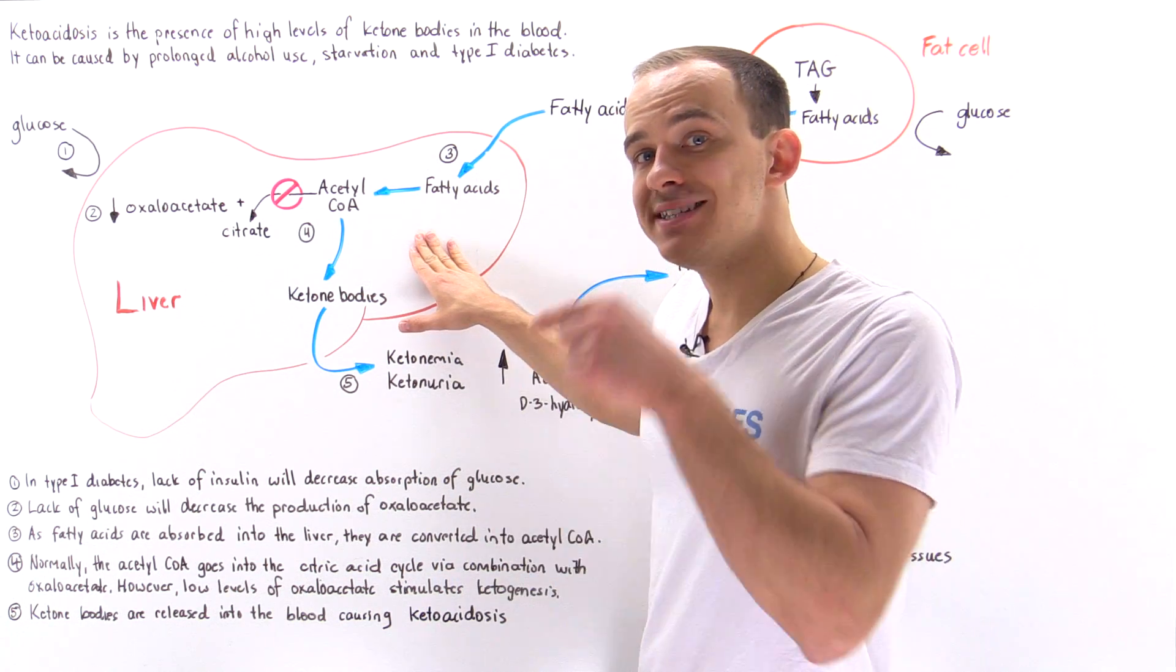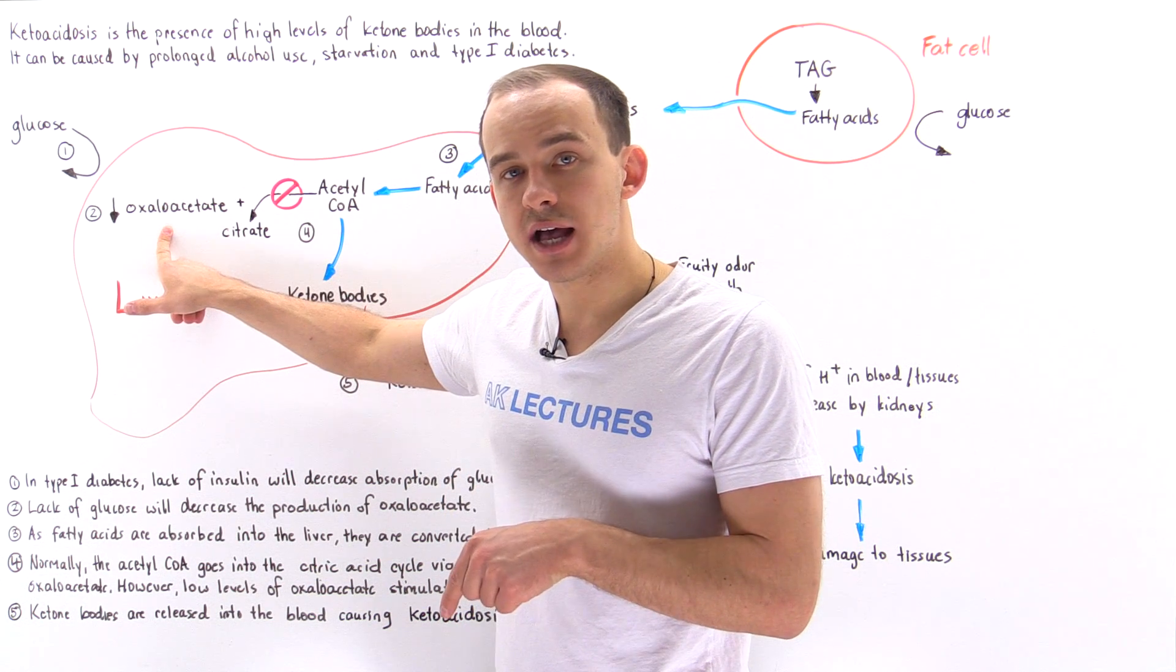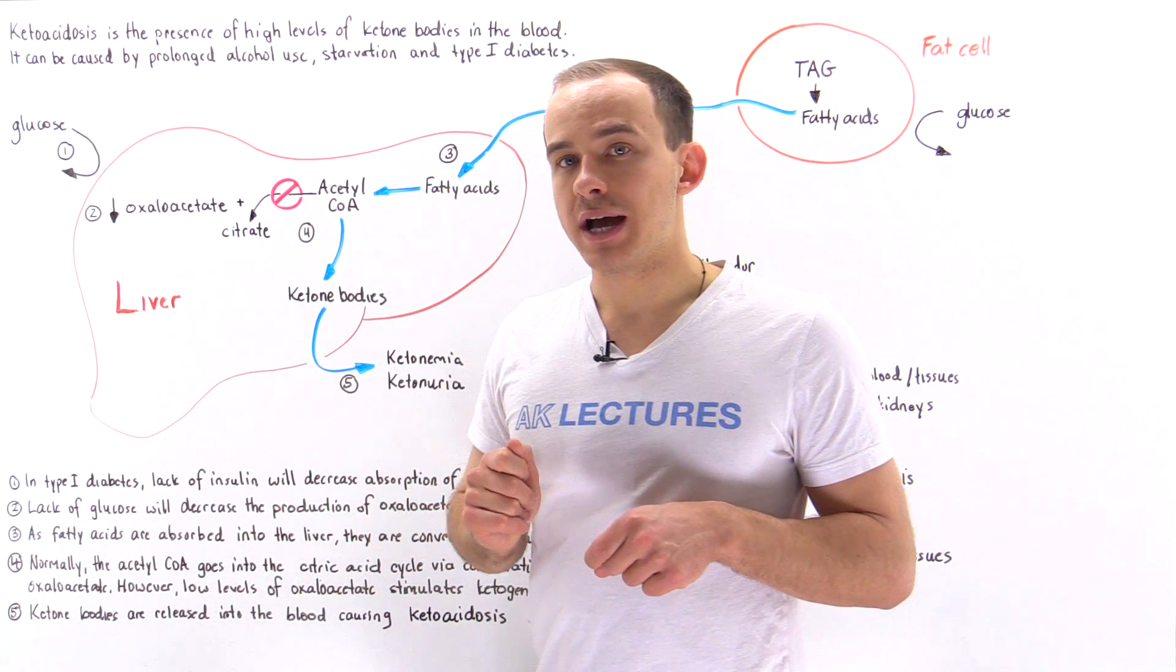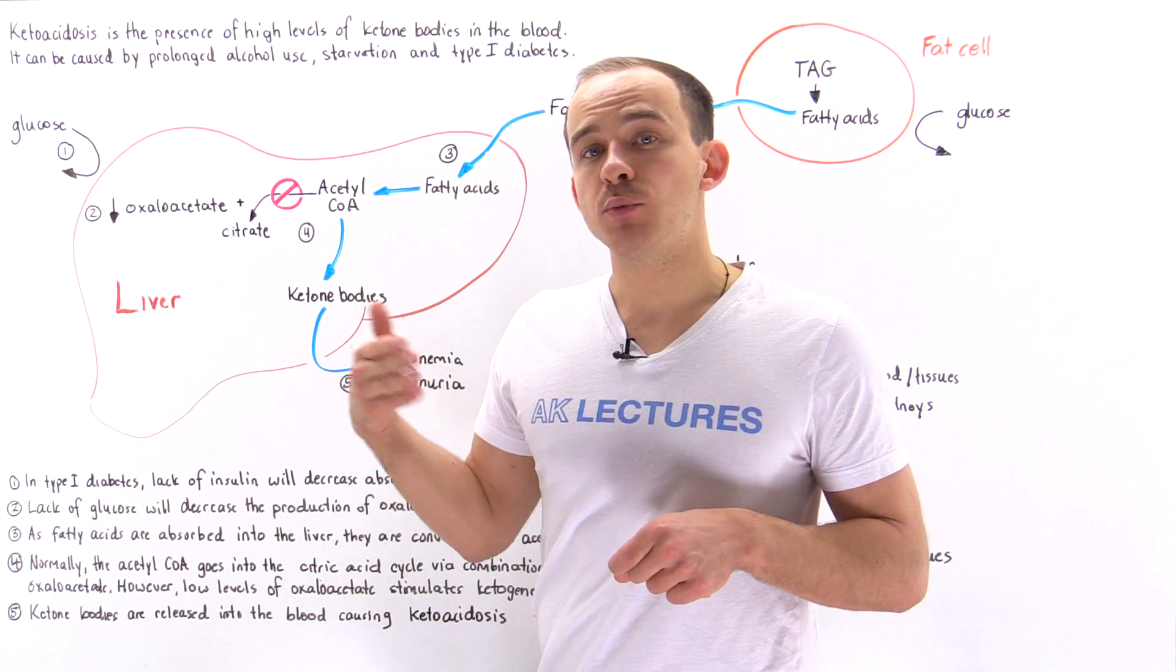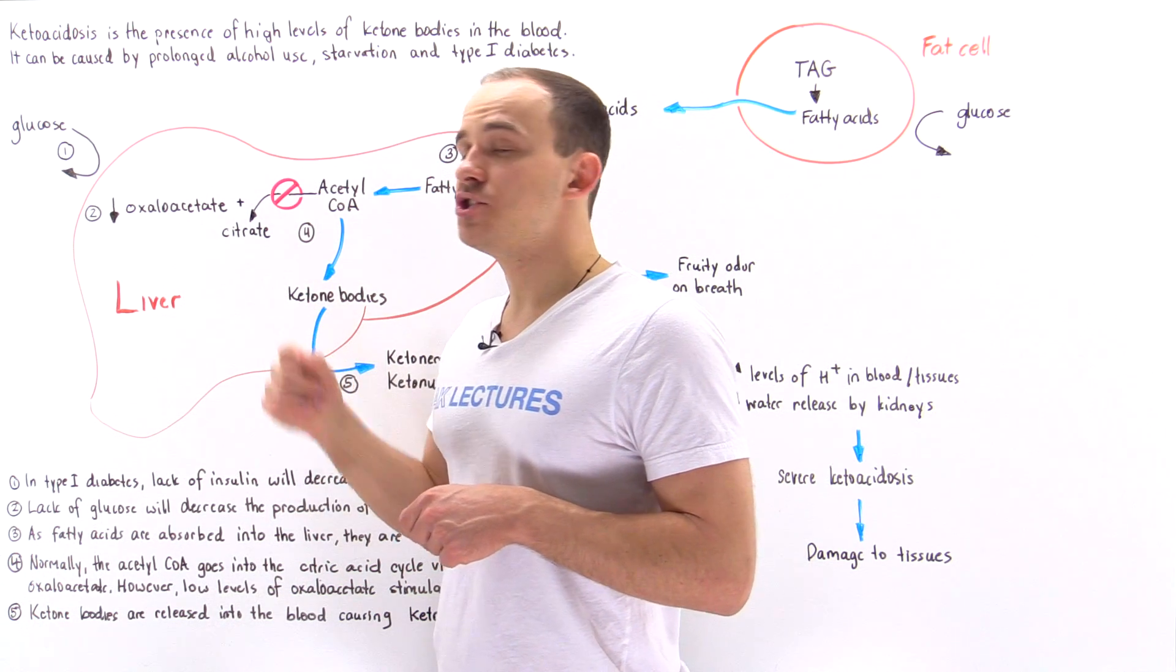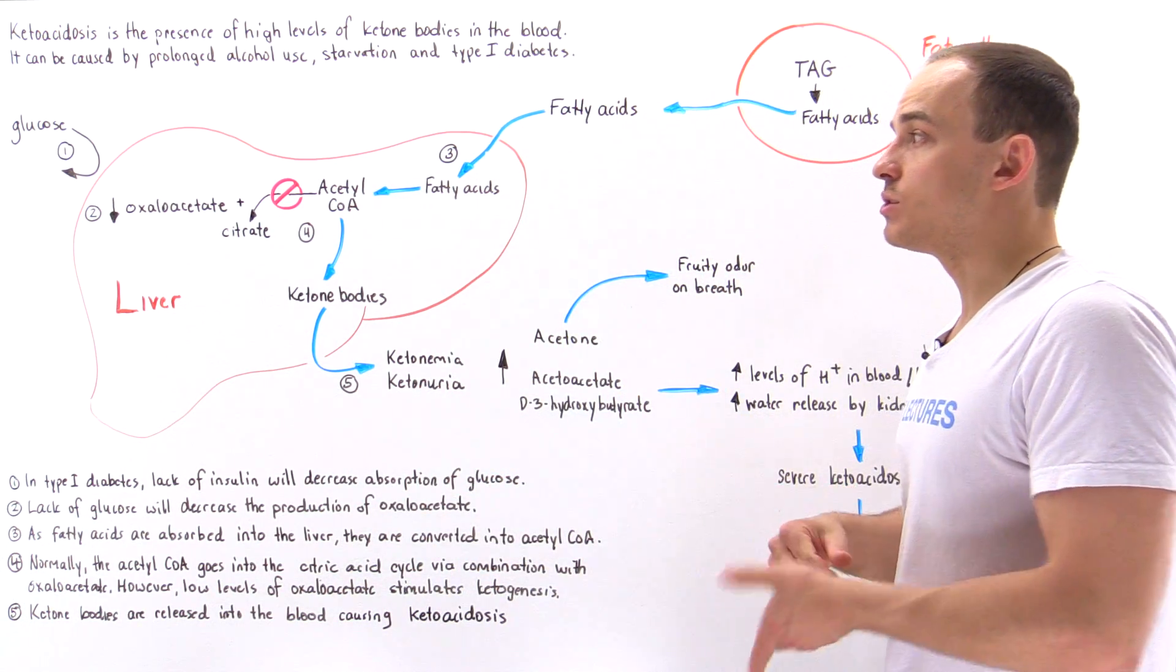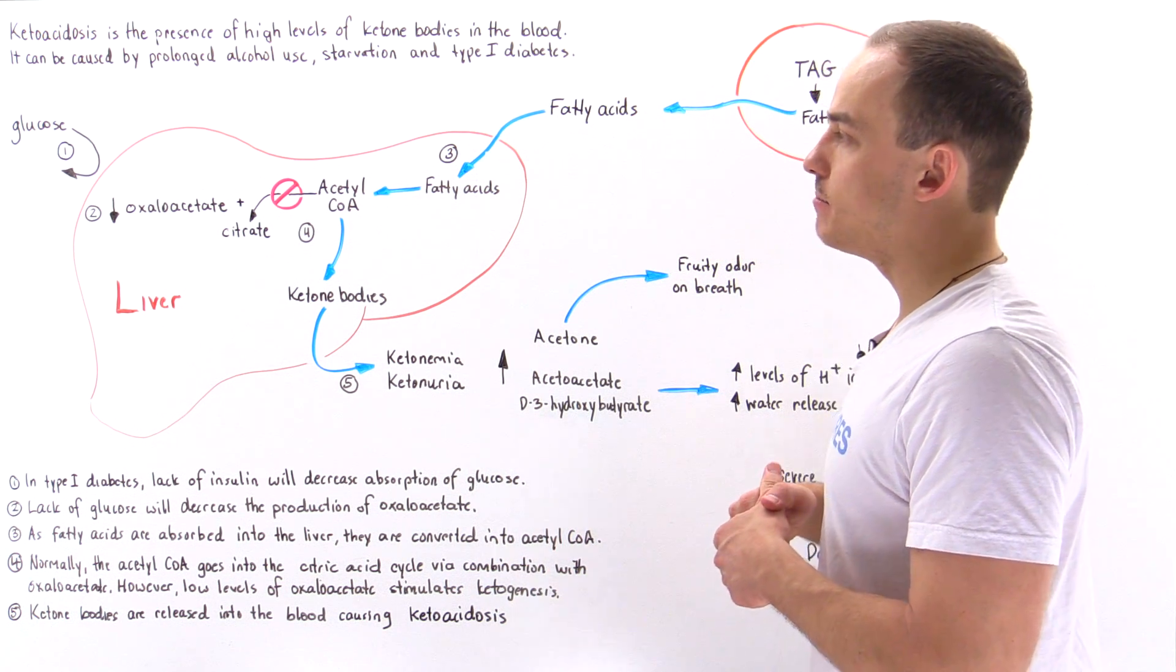...we're going to decrease the level of oxaloacetate inside our liver cells. Why is that important? We need high levels of oxaloacetate to actually use the acetyl coenzyme A that we get from beta oxidation of fatty acids to help us generate citrate, the intermediate of the citric acid cycle, and that helps us generate ATP molecules.